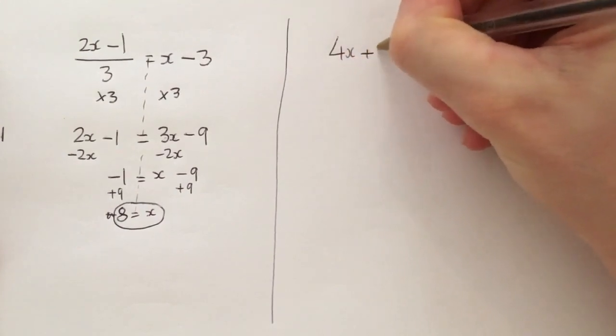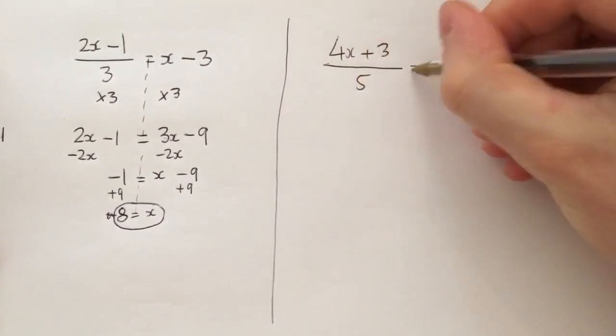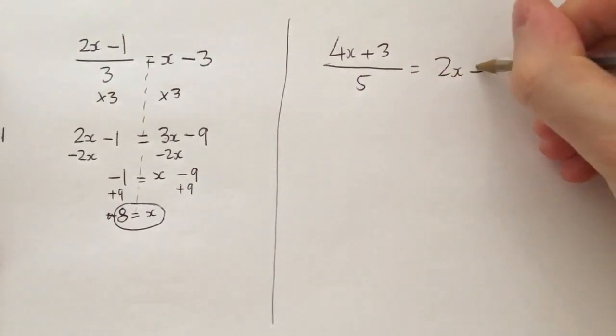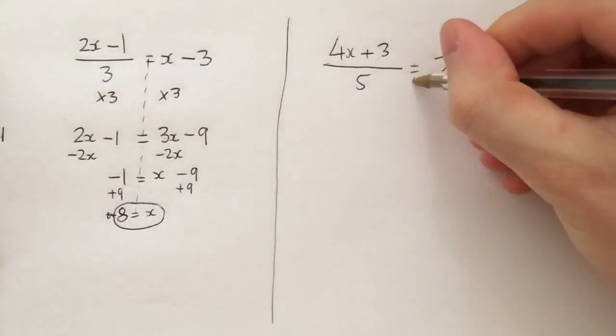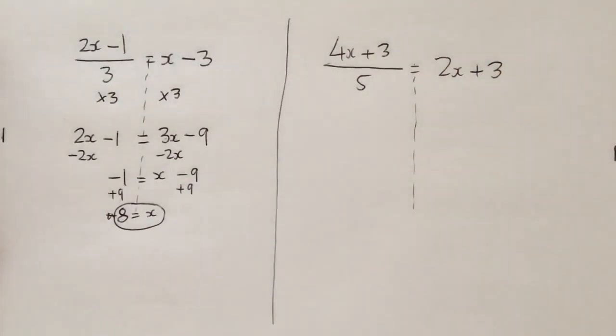So let's do a very similar example here. I've got 4x plus 3 over 5 equals 2x plus 3, and they say to solve that. Right, again let's just say it out loud just so we can make sure we know what the final step was.